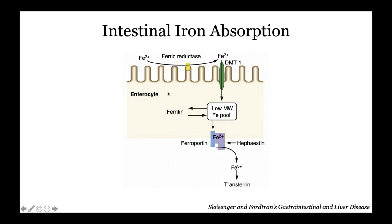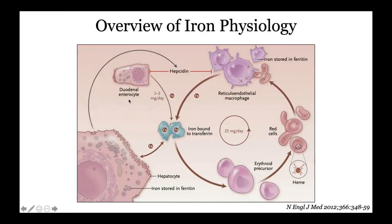This entire absorption mechanism is inhibited by hepcidin, which is a regulatory protein. You have the duodenal enterocyte, you absorb iron through it, and then hepcidin inhibits this absorption. The other big source of iron is from the blood itself — when senescent red blood cells are destroyed, heme is released and processed in macrophages. Hepcidin is an inhibitor for both of these processes, so if you have defective or insufficient hepcidin, you will have iron overload.